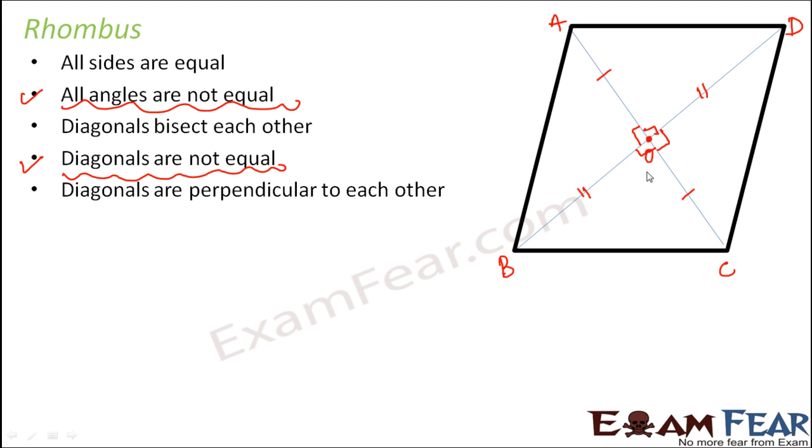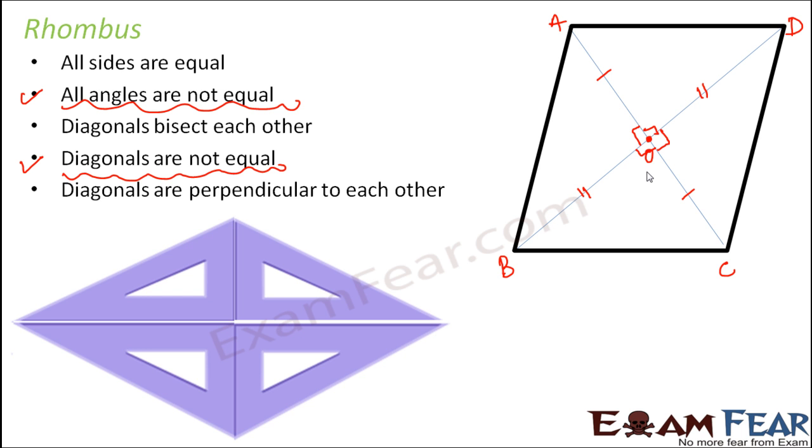So how can we make a rhombus using a set square? To make a rhombus we need 4 set squares because this time we do not want the angles to be 90 degrees. So therefore we take 4 set squares like this.